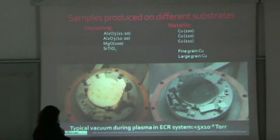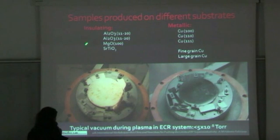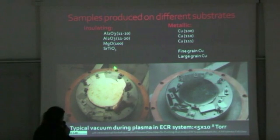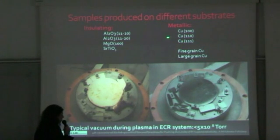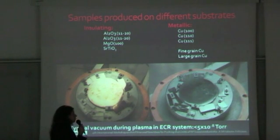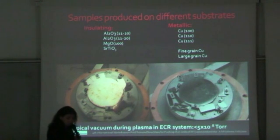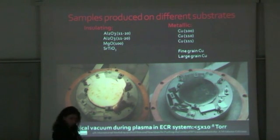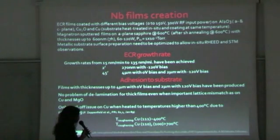We produce a whole series of samples in one run — here are the samples before and after coating. We produce them on different substrates: insulating substrates with A-plane and C-plane sapphire, as well as magnesium oxide in the 100 orientation; we've also done strontium titanate. We also use metallic substrates with metallic or oxidized surfaces, including single crystal copper in various orientations, as well as fine-grained and large-grained copper. This disc is a large-grained copper disc that has been heat-treated at 1,000 degrees C in vacuum for about 24 hours. The typical vacuum during the plasma at full power is better than 5×10⁻⁸ torr, with 10 to 14 kilowatts into the system.